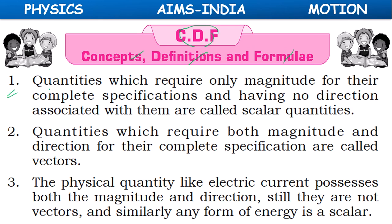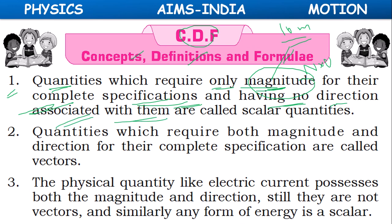First point: scalar quantities are those which require only magnitude — that is, a numerical value times a standard unit — for their complete description, with no direction associated with them. For example, time is a scalar quantity.